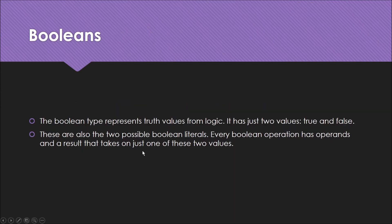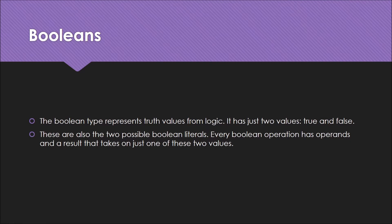Now we come across Booleans. The Boolean type represents two truth values from logic. What this means is that if something is Boolean, you will either get a true value or a false value. Whenever there is a Boolean expression, the result is either true or false — please keep that in mind.